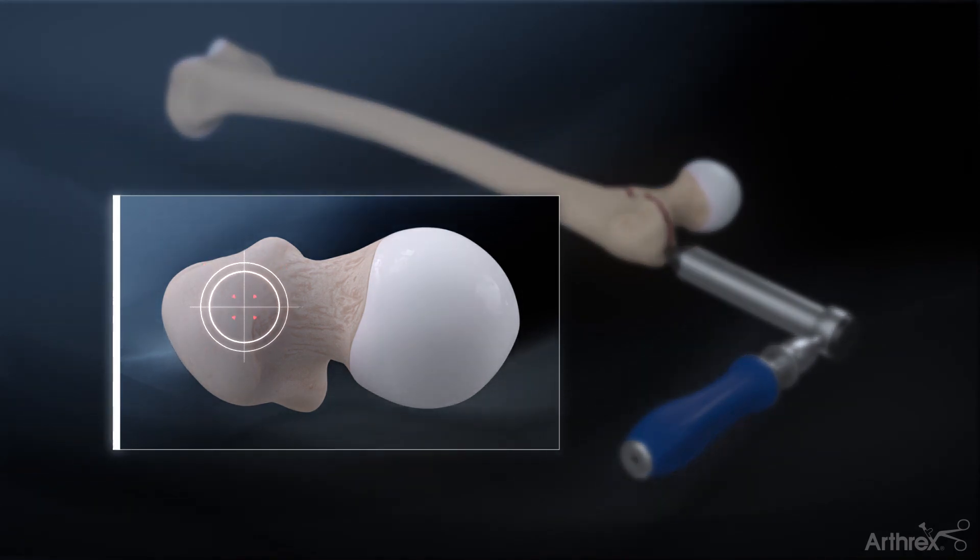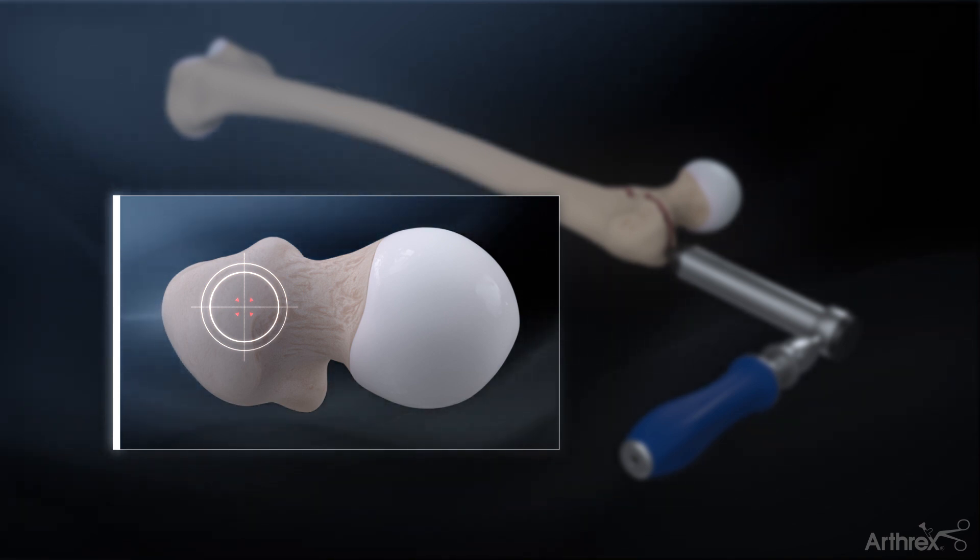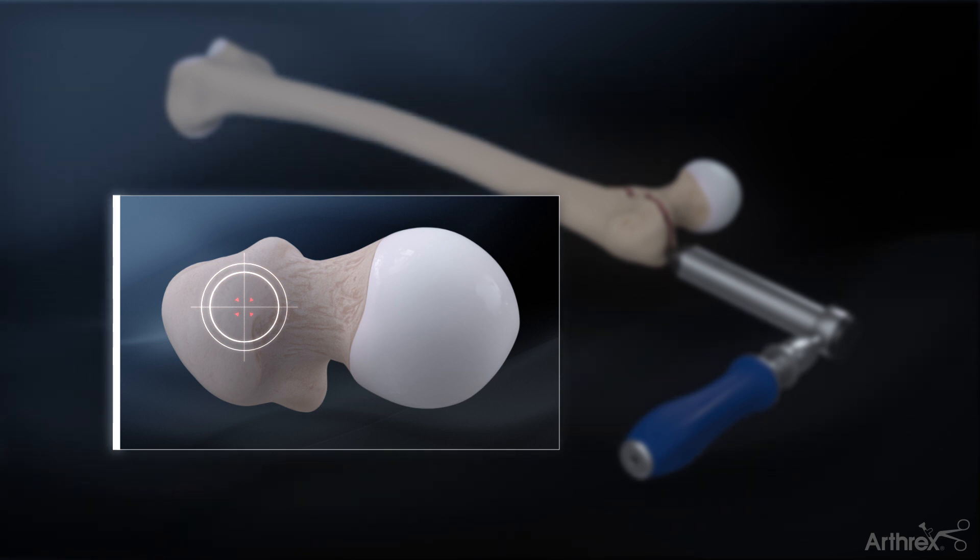The entry point for the nail is typically at the tip of the greater trochanter on the AP X-ray and at the junction of the anterior and middle third of the great trochanter on the lateral X-ray. This point may vary slightly depending on the patient anatomy and fracture pattern.